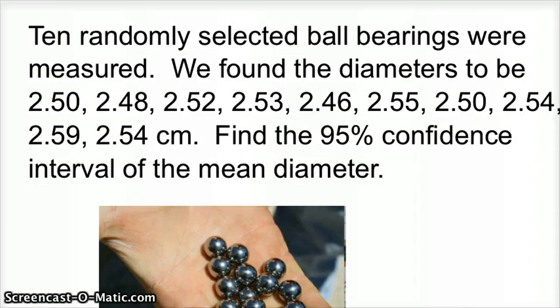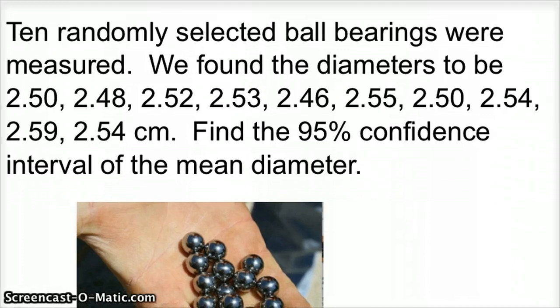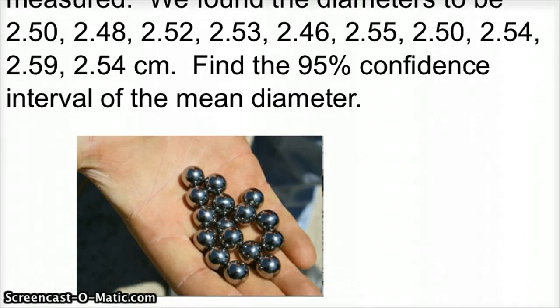So 10 randomly selected ball-bearings were measured. We found the diameters to be 2.5, 2.48, 2.52, 2.53, 2.46, 2.55, 2.50, 2.54, 2.59, and 2.54 centimeters. Find the 95% confidence interval of the mean diameter. And so if you look at my picture, I've got more than 10 there, but hopefully you get the picture.